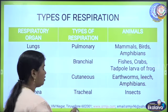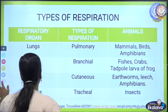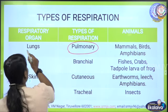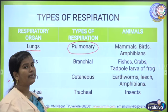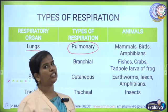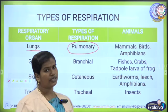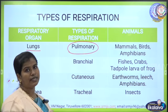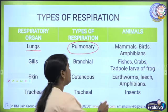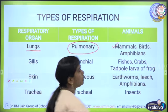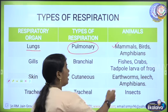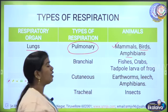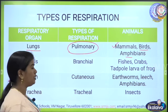The first one is pulmonary respiration. If a particular organism uses lungs, then that respiration is called pulmonary respiration. Examples of animals which use pulmonary respiration are mammals — humans obviously come under this category — birds, and amphibians.